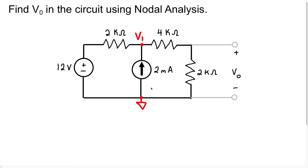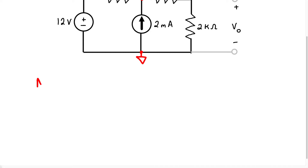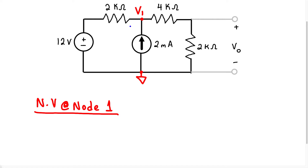We're going to write the node voltage equation at node 1. We're going to assume that the current is leaving the node in this direction. So we take the difference between these two voltages divided by this 2,000-ohm resistor. Because we're entering the positive terminal of this voltage source, it's going to be a positive current, giving us V1 minus positive 12 over 2,000. Now we assume the current is going in this direction, and because we assume the current is leaving the node and we have a current source actually entering the node, we treat that as a negative current.